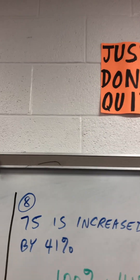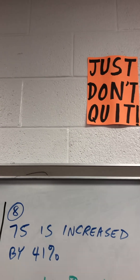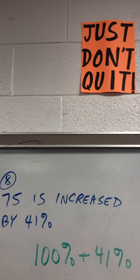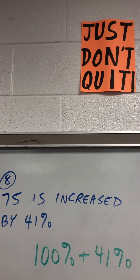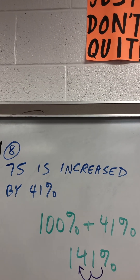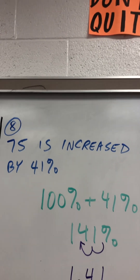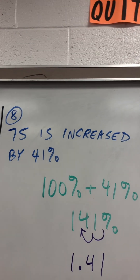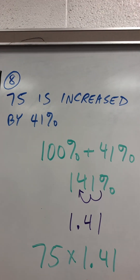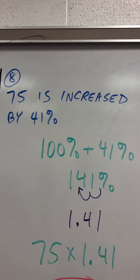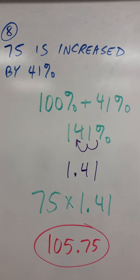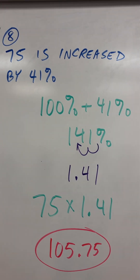75 is increased by 41%. That's 100% plus 41%. That's 141%. Move the decimal two places, 1.41. 75 times 1.41 is 105.75.